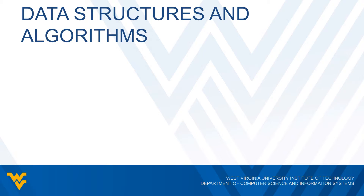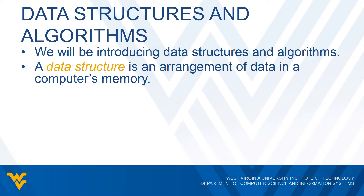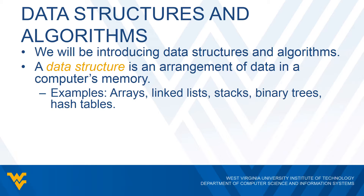The purpose of this course is that we're going to be introducing data structures and algorithms — both concepts we touched on briefly in CS 121. A data structure is basically an arrangement of data in the computer's memory: how we actually store and arrange data. We've seen at least one example in CS 121 — arrays — but there are other types as well. We will look at arrays, linked lists, stacks, queues, binary trees, hash tables, and so forth. These are all different types of data structures.